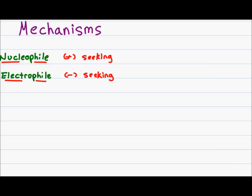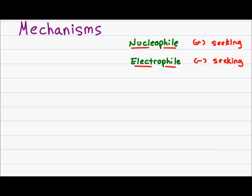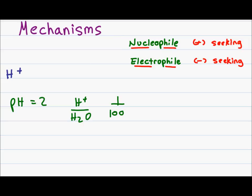In future videos I will address each of the important mechanisms in your organic course, but for now I will show an overview so you understand why mechanisms happen the way they do. Many mechanisms you see will be acid catalyzed. The H+ in solution came off an acid such as hydrochloric, sulfuric, or phosphoric acid. Given a strong acid with a pH of 2, the ratio of H+ to water is 1 in 100, and an increased pH simply means that ratio of water to H+ increases further.